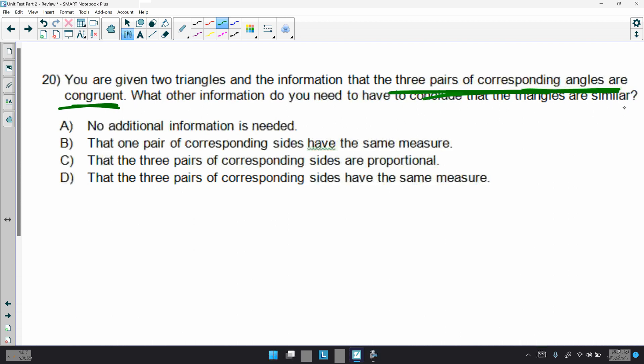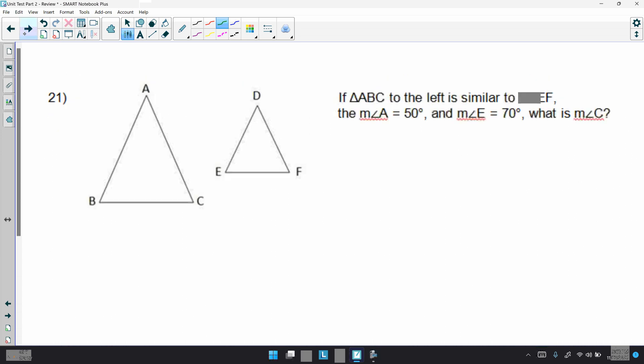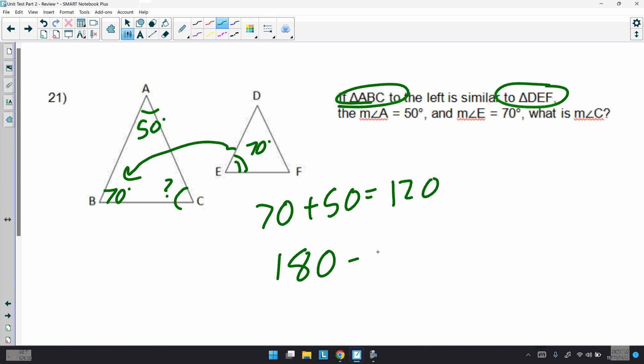20. You are given two triangles and the information that three pairs of corresponding angles are congruent. What other information do you need to have to conclude that the triangles are similar? We don't need any more because that's the angle-angle postulate. 21. If triangle ABC to the left is similar to DEF, and we have a measure angle for A to be 50, and the measure of angle E to be 70, what is C? Well, if these triangles are similar, that means that 70 for E is going to be 70 for B. And, now that I have those two, we can subtract that from 180 to get C. Well, 70 plus 50 is 120, and if we take that and subtract it from the 180, we get 60 degrees. So, you could say C is 60, so is F, because they are similar.